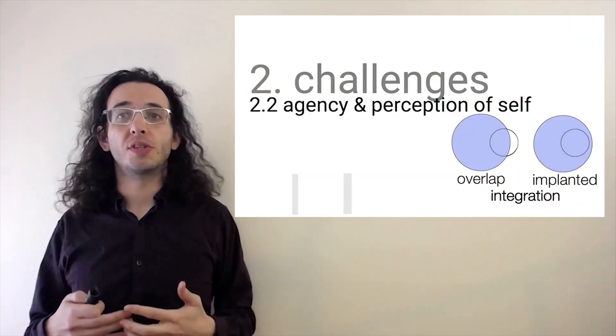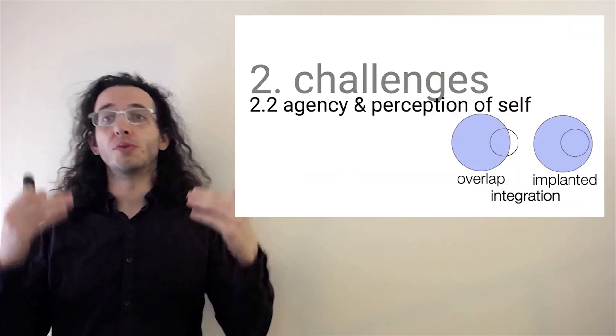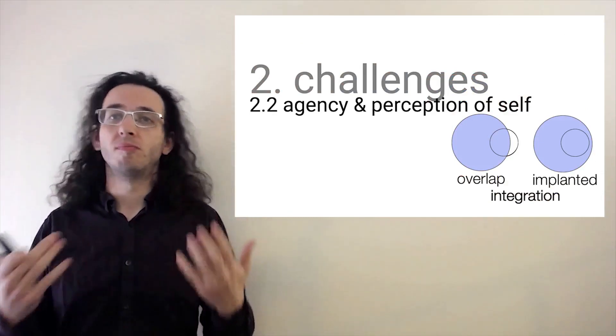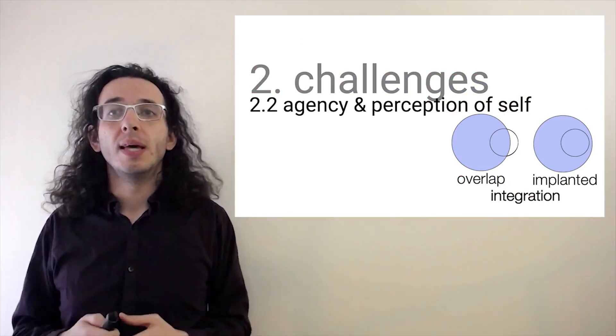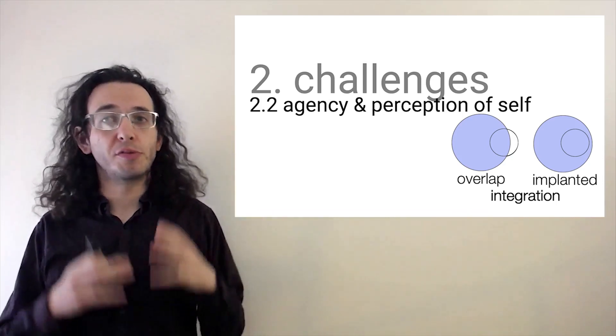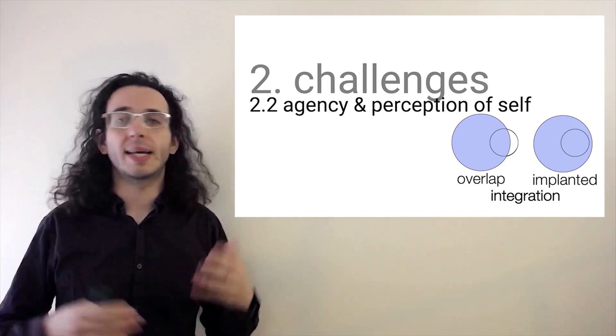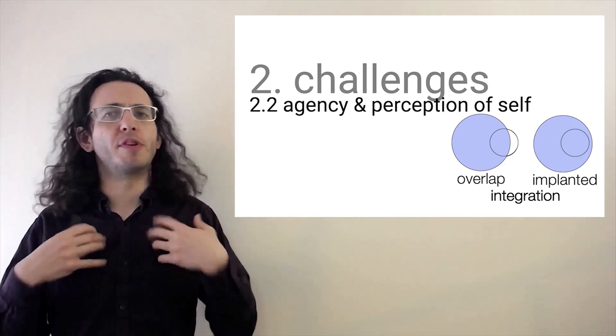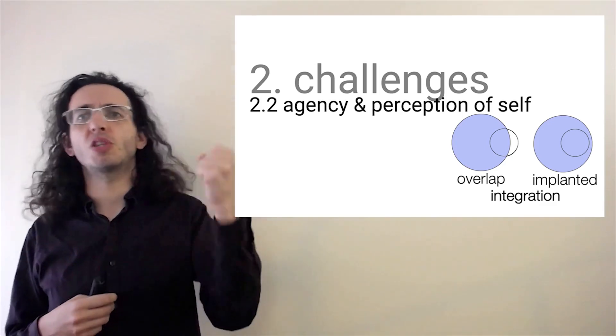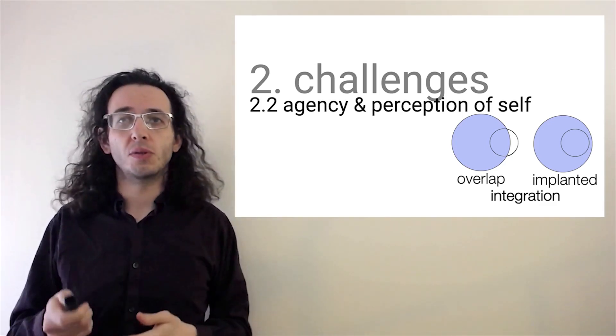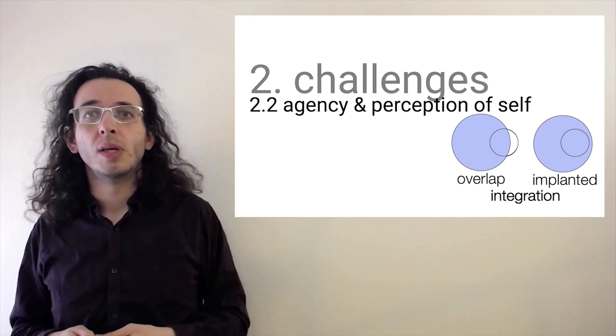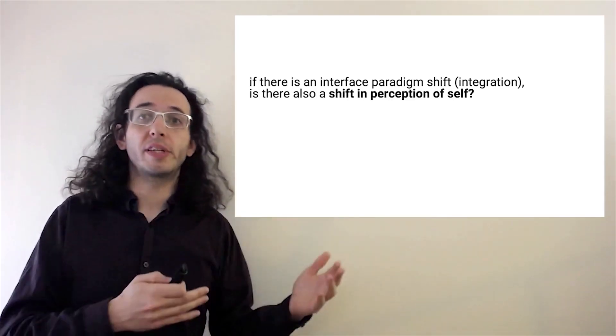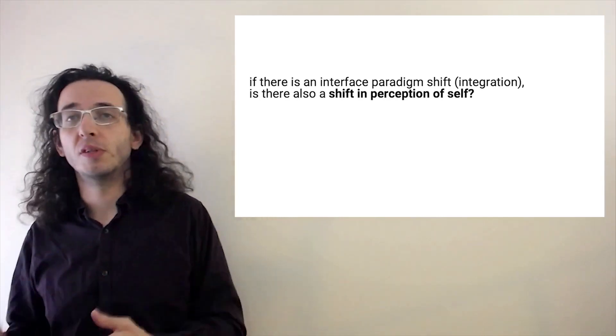Now, I've talked about challenges down at the intersection of hardware and users' biology and their skin, but how do these integrated devices might affect identity and behavior? The big open question here is, if you've integrated with a device to a point that, as I just told you, the device maybe sits well inside your body and its access to a very direct means of interaction, such as muscle movement, what does this do to your sense of self? Right? In other words, if there's an interface paradigm shift towards integrated devices, is there also a shift in the perception of self?